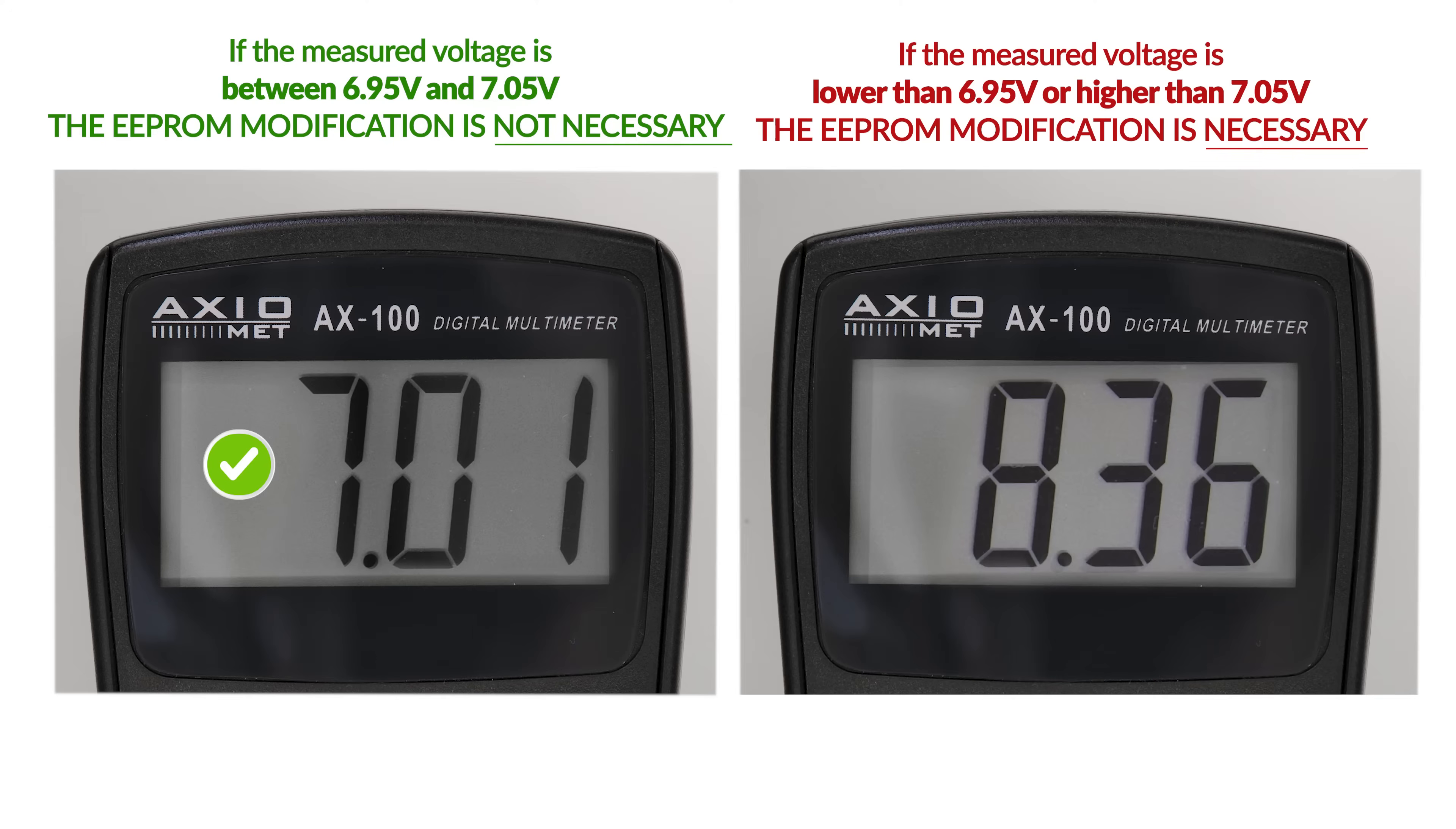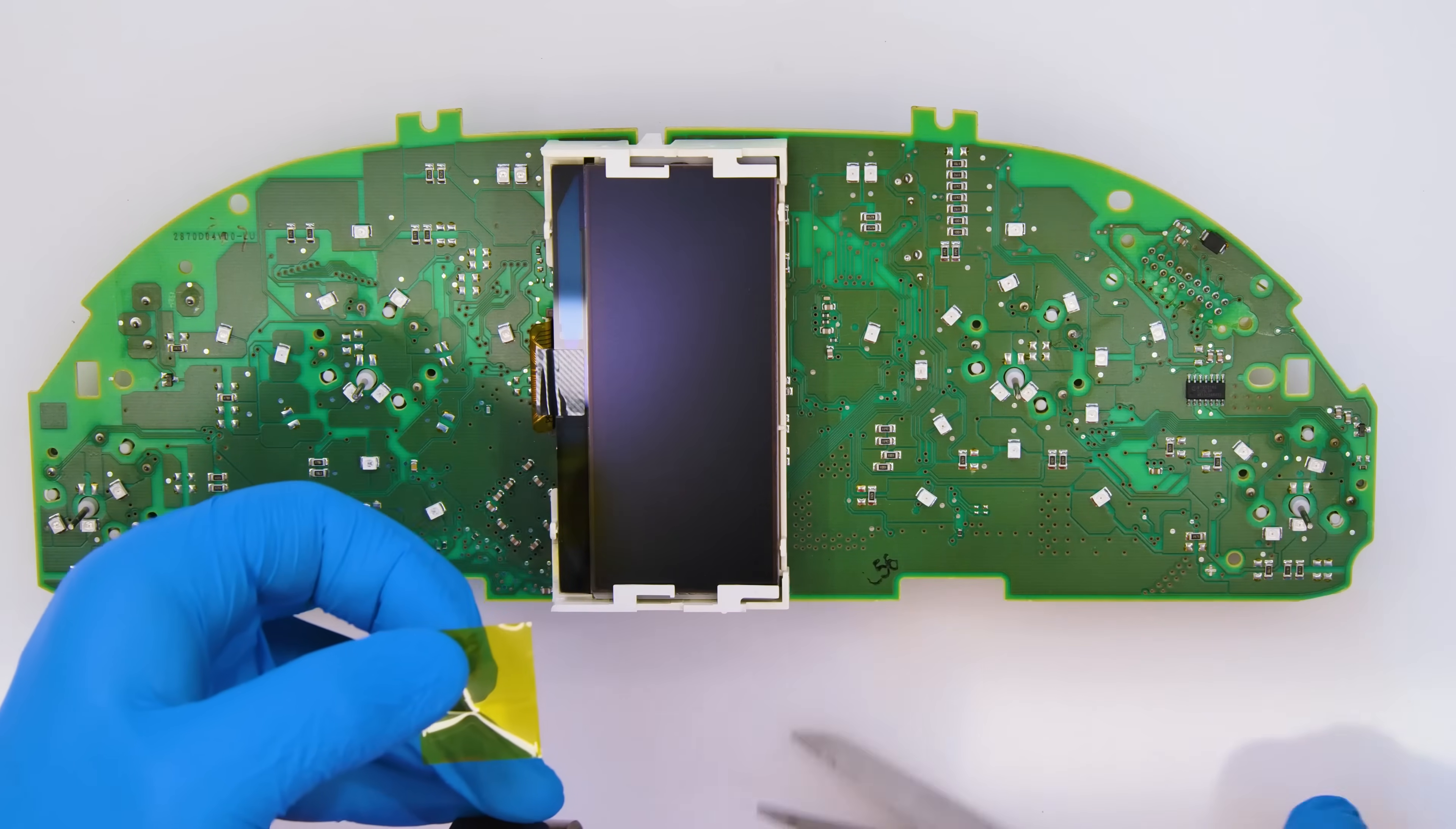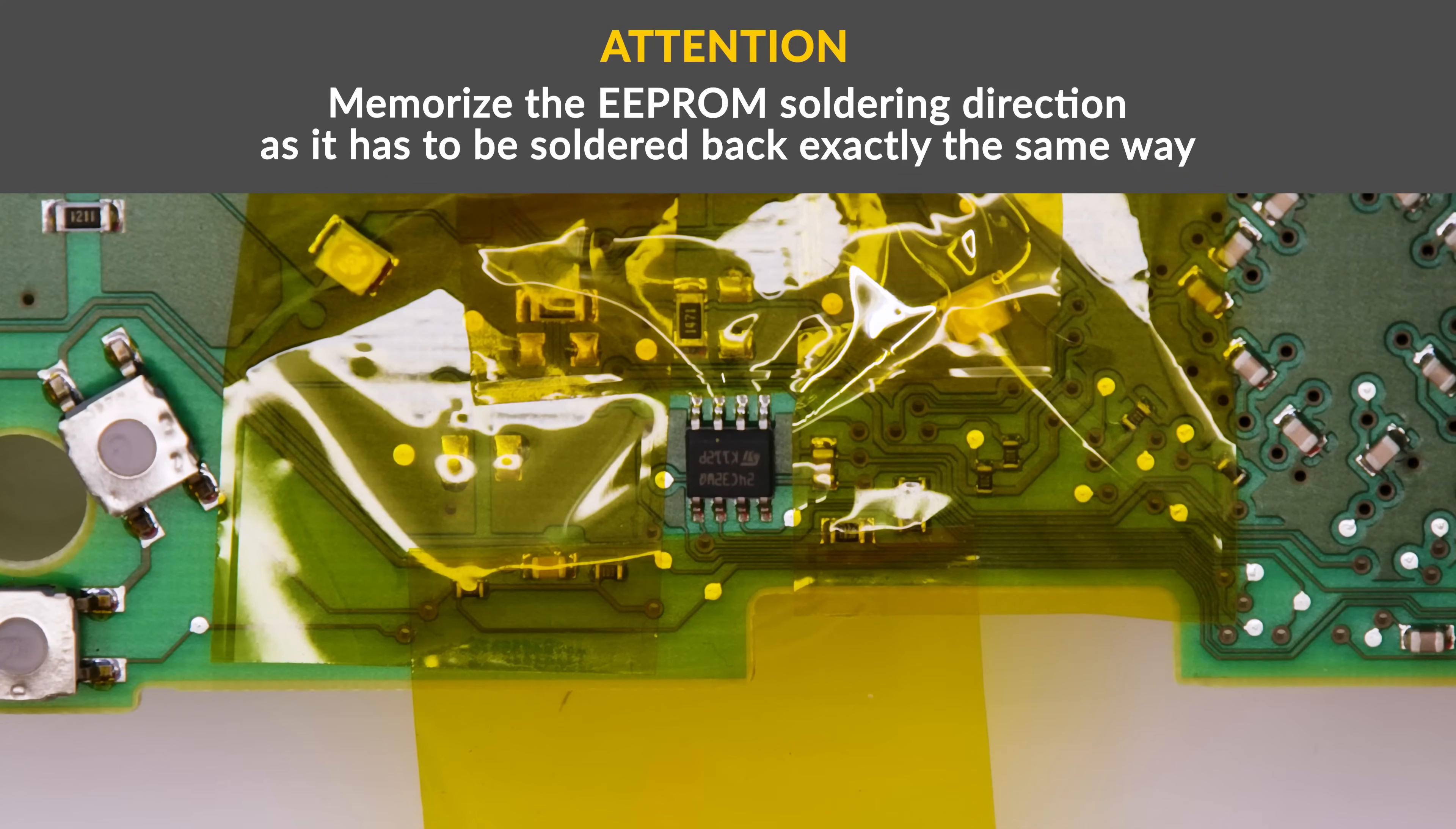Otherwise, to adjust the voltage and the display contrast, it will be necessary to do a modification of the EEPROM 24C04 or 24C32 highlighted in the picture with a specific programmer. Switch off the dashboard and thermally insulate the components around the EEPROM with some kapton tape. Memorize the EEPROM soldering direction as it has to be soldered back exactly the same way.